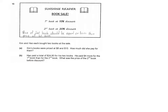Part B: Hal paid a total of $24.80 for his two books. He paid $4 more for the first book than for the second book. What was the price of the second book before the discount?